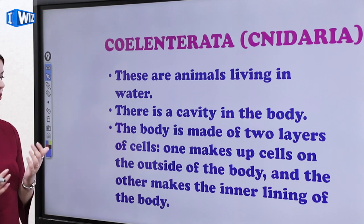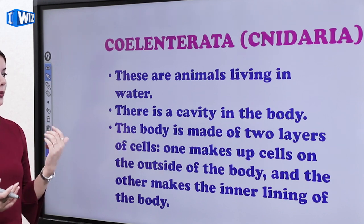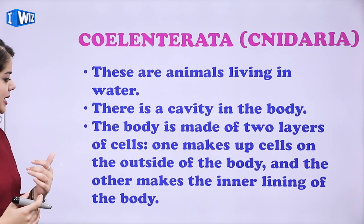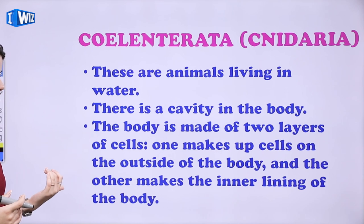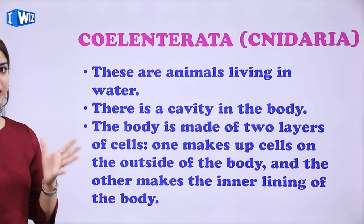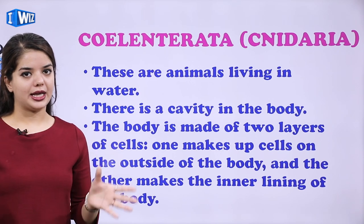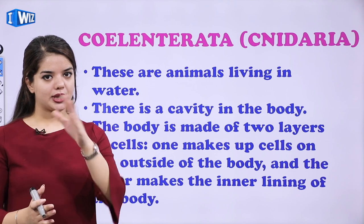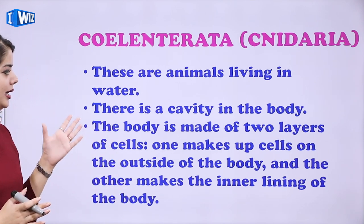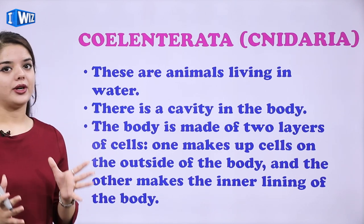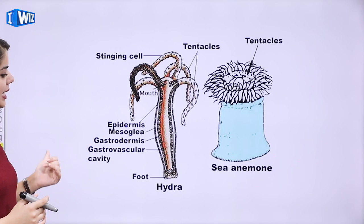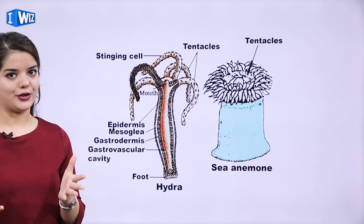Then we have Coelenterata. These are animals living in water. There is a cavity in the body. The body is made up of two layers of cells — one makes up cells on the outside of the body and the other makes the inner lining. So in mein outside lining hoti hai, internal lining hoti hai, and they also have a body cavity. Example is Hydra.